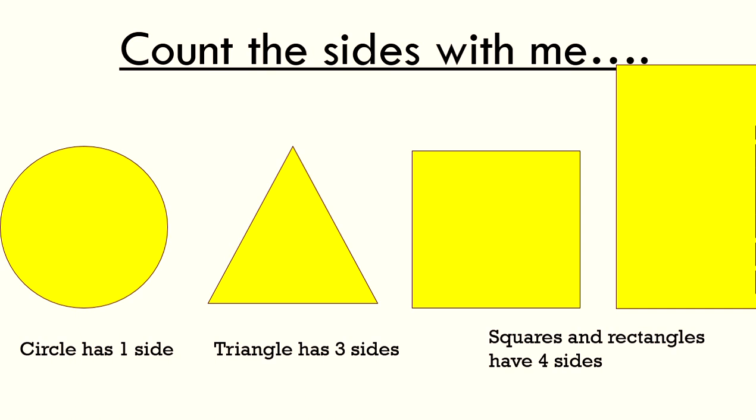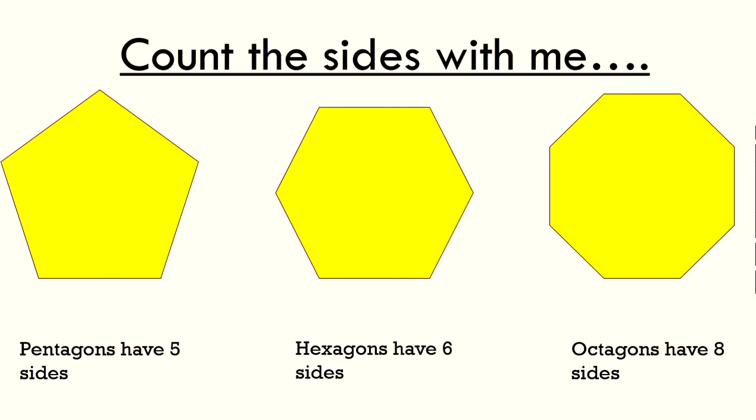Squares and rectangles have, you've got it, four sides. Well done. A pentagon has, that's it, five sides.